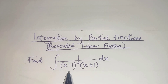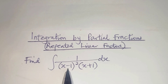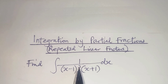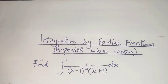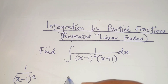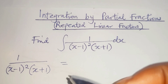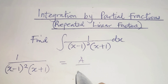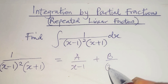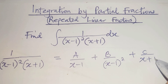Here there is a repeated factor in this denominator, because the factor (x minus 1) appears twice. So we are going to write it as: 1 over (x minus 1) squared times (x plus 1) is equal to A over (x minus 1) plus B over (x minus 1) squared plus C over (x plus 1).